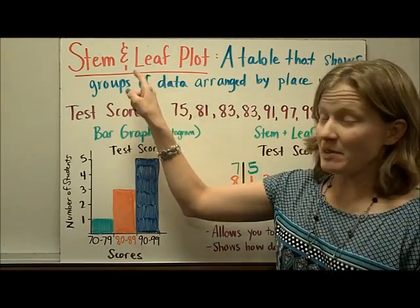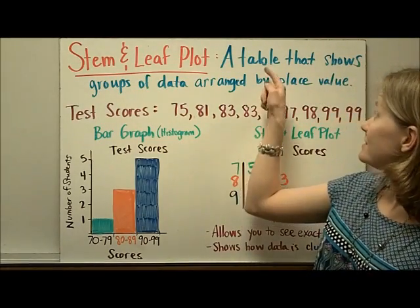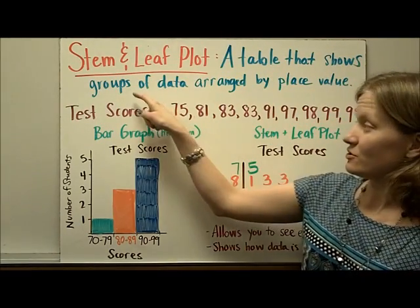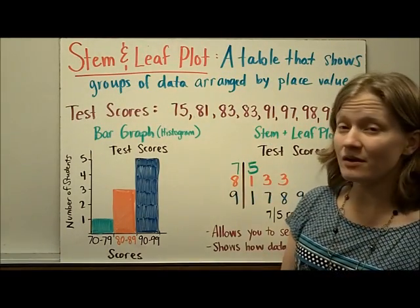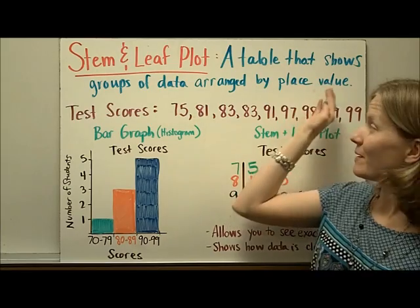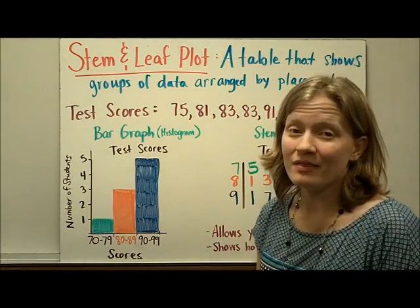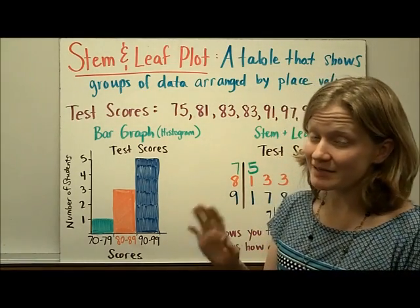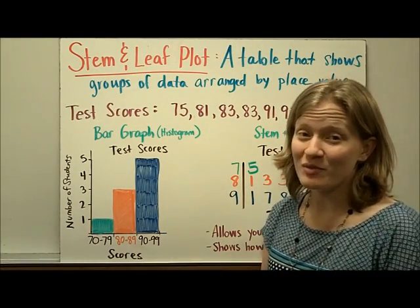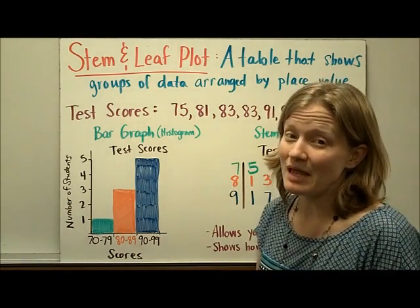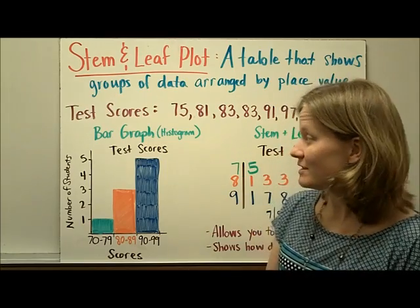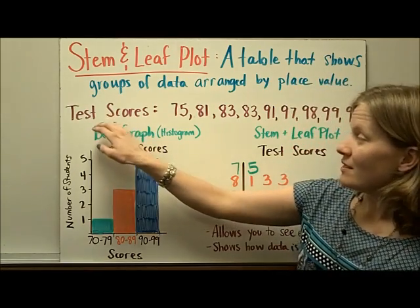A stem and leaf plot is a table that shows groups of data arranged by place value. Let's look at an example of when it would be good to use a stem and leaf plot.